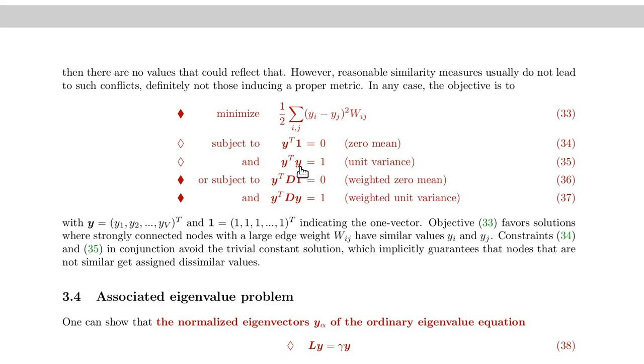There's a variant to that, where we weigh the components with matrix D. So the zero mean constraint becomes a weighted zero mean constraint, which takes this form.